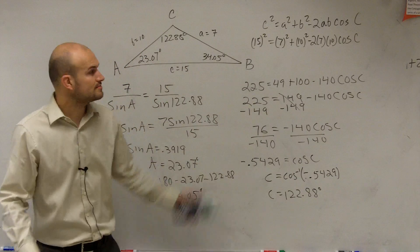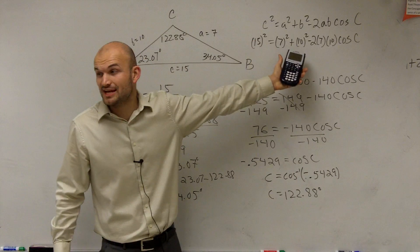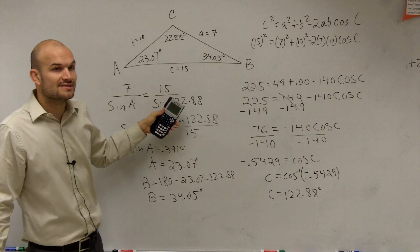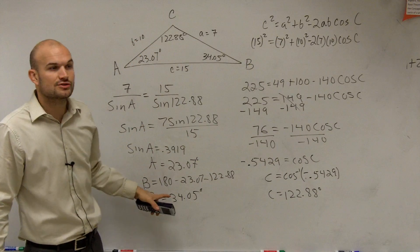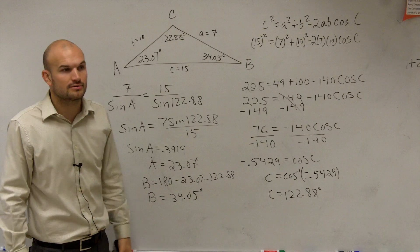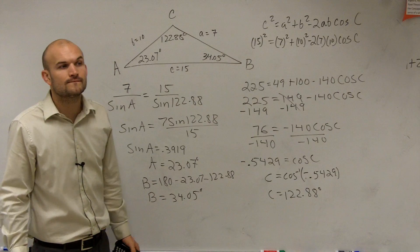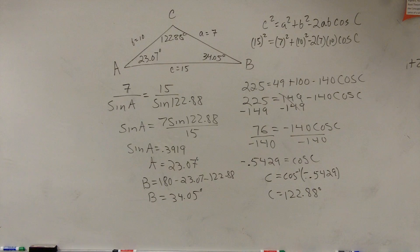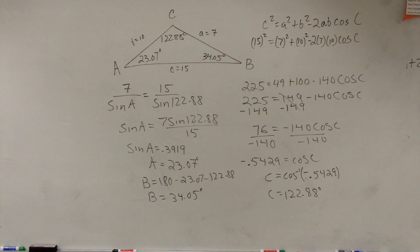And there you go. So apply the law of cosines, find the largest angle first. Get that angle, plug it in. Use law of sines to figure out your other angle. And then use your triangle angle sum theorem to find the third. Cool? You need to memorize what? No, if you look on your half sheet of paper that I gave you guys.